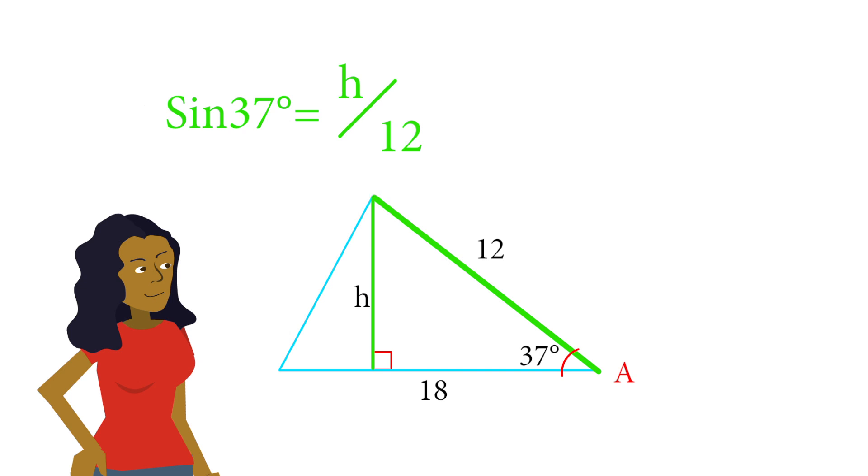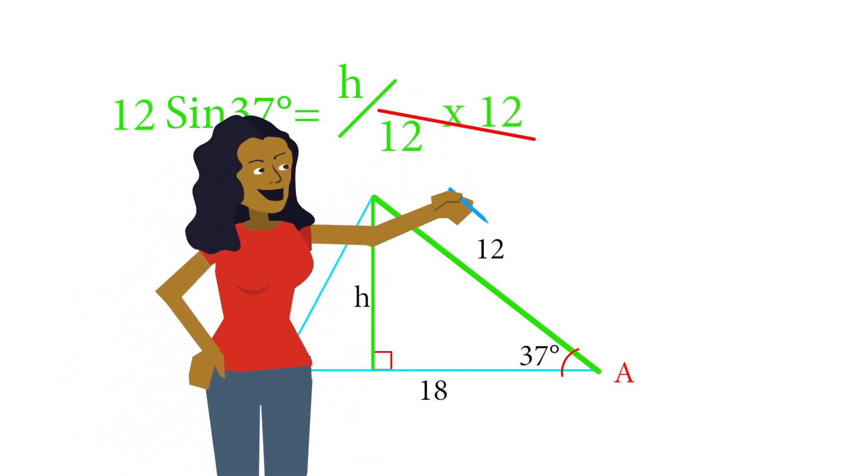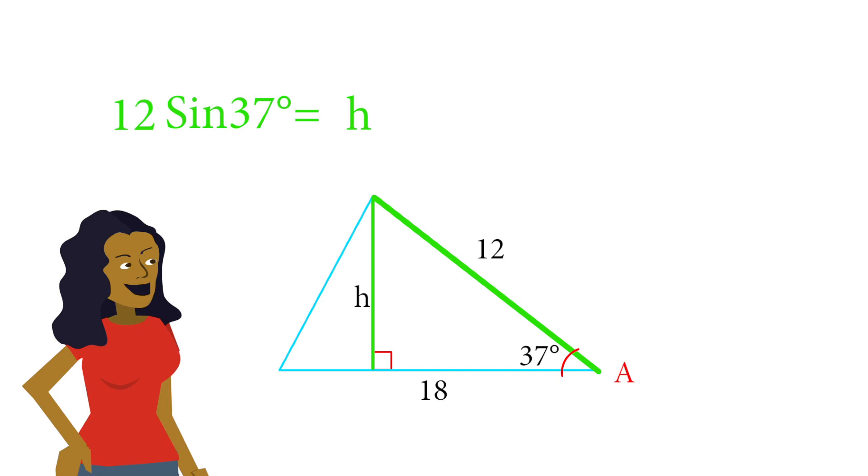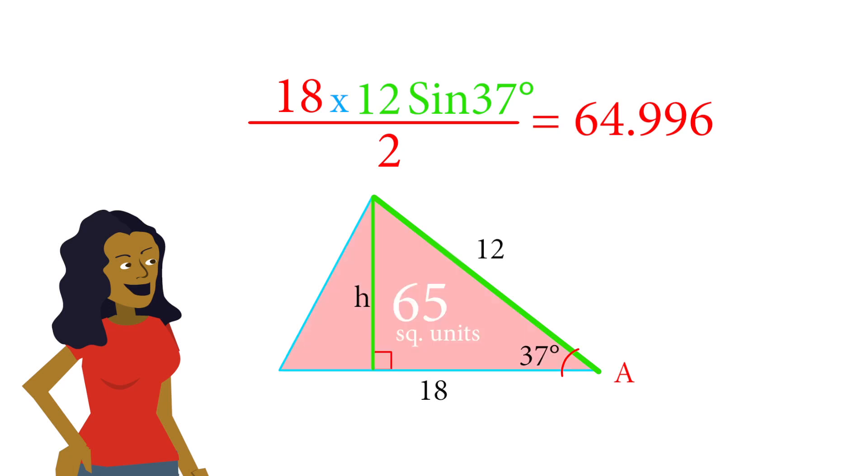Now, we do a little algebra here. We're going to multiply both sides of this equation by 12, and we have a value for H. Now let's plug this back in. We can calculate the area of the triangle, which is one-half base times height. B is 18, and our height now is represented by the equation 12 times the sine of 37 degrees. So what we want to do is calculate this out, and the whole thing ends up being 64.996, or about 65 square units.